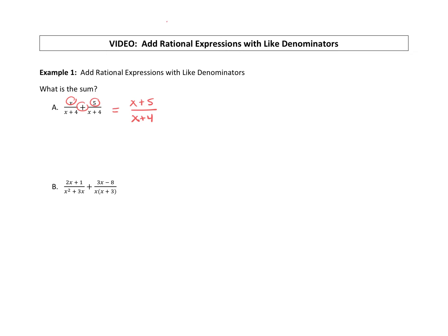All right, so our answer, what is the sum? It's x plus 5 over x plus 4, but let's also make sure that we are identifying the domain for all the x's, as long as x does not equal, if we look at our denominator, that x plus 4, x cannot equal negative 4.